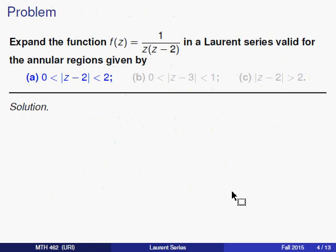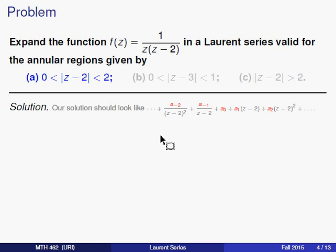Taking a look at the first problem, Part A: we want to find the Laurent series for the function 1 over z(z-2) that is valid in the annular region where the modulus of z minus 2 ranges between 0 and 2. Since this series should be centered at 2, our Laurent series should be in terms of powers — both negative and positive — of z minus 2. We notice that the function already has a z minus 2 in the denominator, so all we need to do is expand the 1 over z.